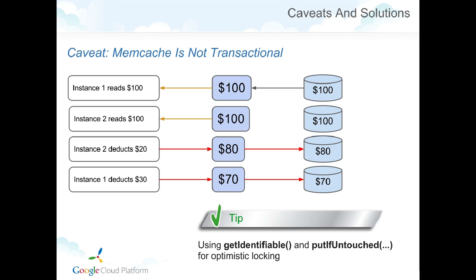Another caveat is that Memcache is not transactional. Consider two running instances where instance one reads an account in Memcache with $100. Instance two deducts $20, making the value $80. Instance one then deducts $30 and writes the incorrect value of $70. To address this for counters, you can simply use increment, treating the value as a counter. For other types of data or more flexibility, use getIdentifiable in both instances. When doing the update with putIfUntouched, instance two will succeed, but instance one will fail because the value was modified in between.